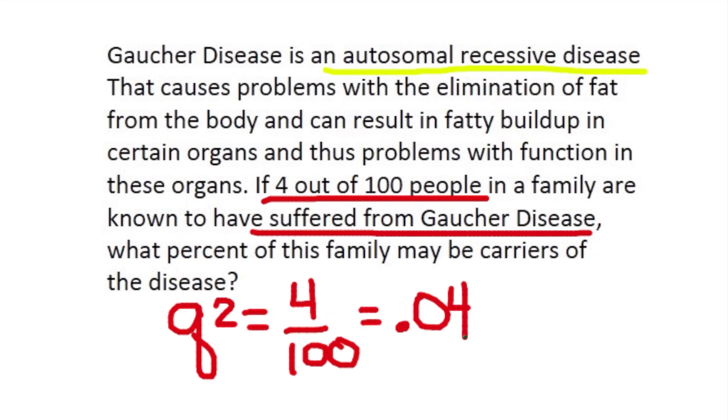So now let's determine what they are asking for. What percent of the family may be carriers of the disease? So they want the percent of carriers, and carriers are a heterozygous genotype, which is represented by 2pq, and that's what we're looking for.